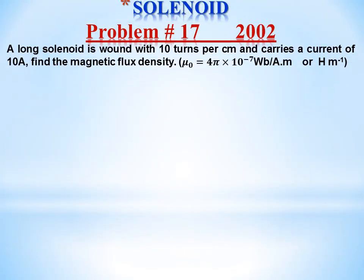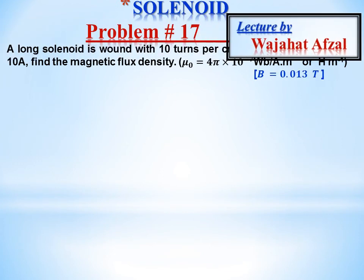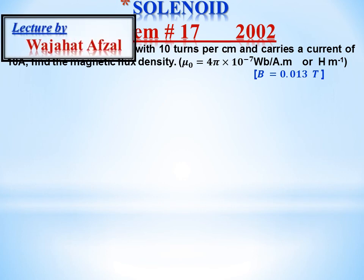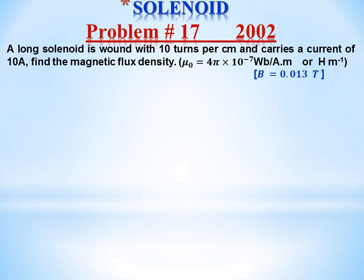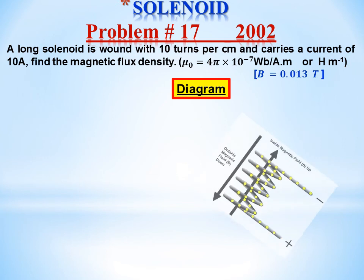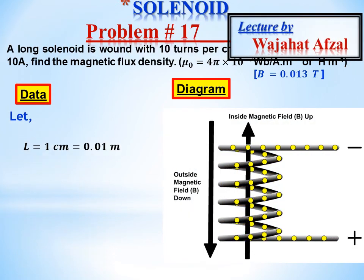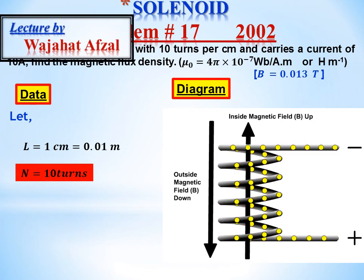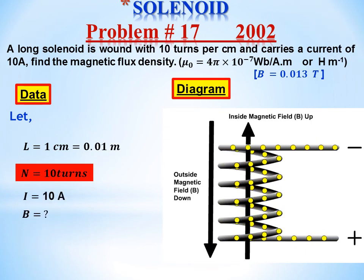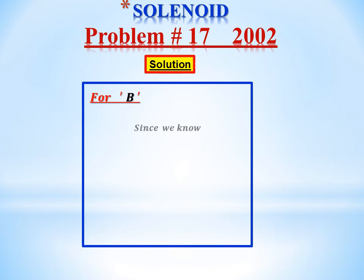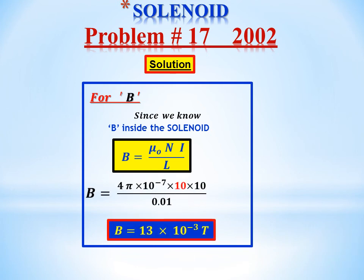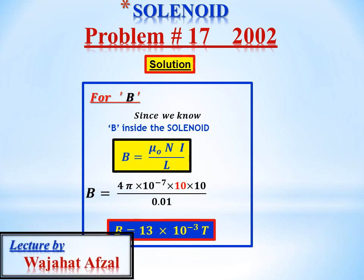Problem number 17: A long solenoid wound with 10 turns per centimeter carries a current of 10 ampere. Find the magnetic flux density. Data: L = 1 cm = 0.01 m (since the rate is per centimeter); N = 10 turns; I = 10 A. Using B = μ₀NI / L and substituting values, the required answer is 13 milli-Tesla, i.e., 13 × 10⁻³ Tesla.